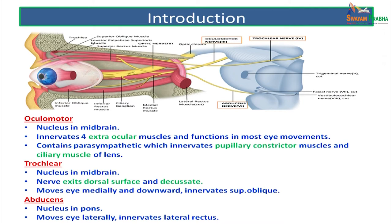The overview of these three nerves: the oculomotor nerve has its nucleus in the midbrain and supplies all extraocular muscles of the eyeball along with levator palpebrae superioris, except the superior oblique and lateral rectus. It also conveys parasympathetic fibers to the ciliaris muscle and the pupillary constrictor muscle for accommodation and constriction of the pupil. The trochlear nerve nucleus is also in the midbrain. Its peculiarity is that it is the only nerve which exits from the dorsal surface of the midbrain and has a true decussation. This nerve supplies the superior oblique muscle, which moves the eye medially and downwards.